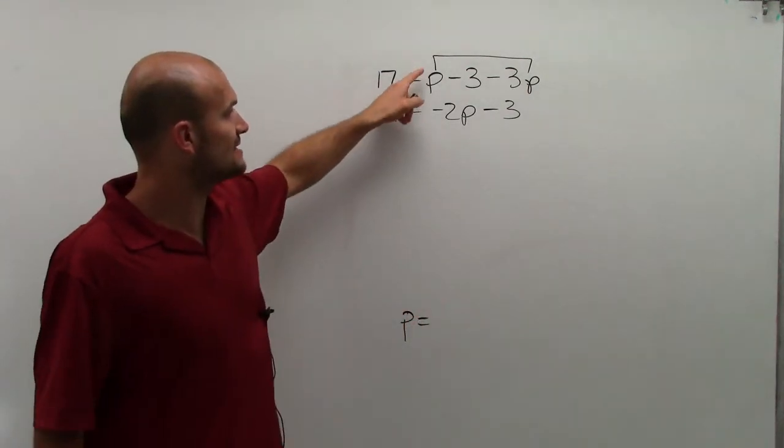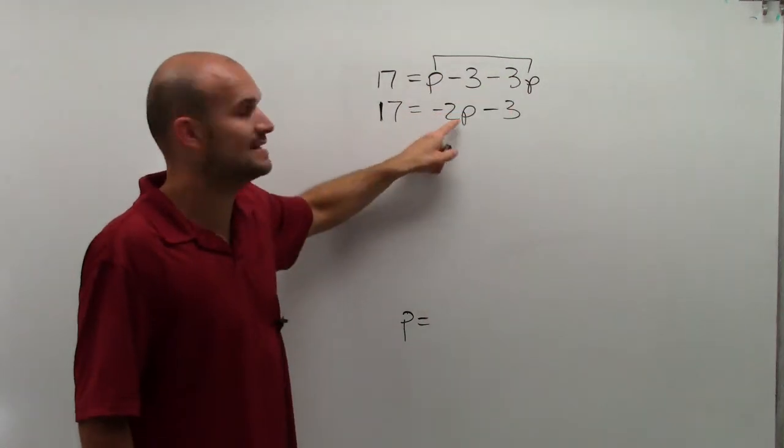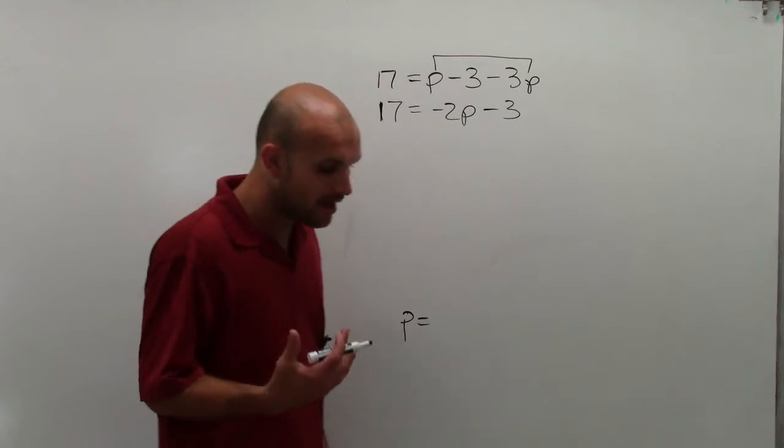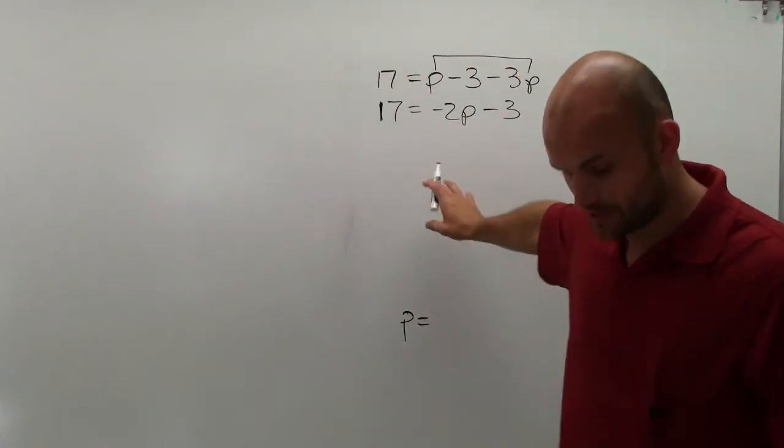And so to do that, I just take 1p, which is really a 1 in front of there, minus 3p, which is a negative 2p. Then the negative 3 still stays there. Now when you take a look at this, you say, oh, OK, now I have what we call a two-step equation, right?